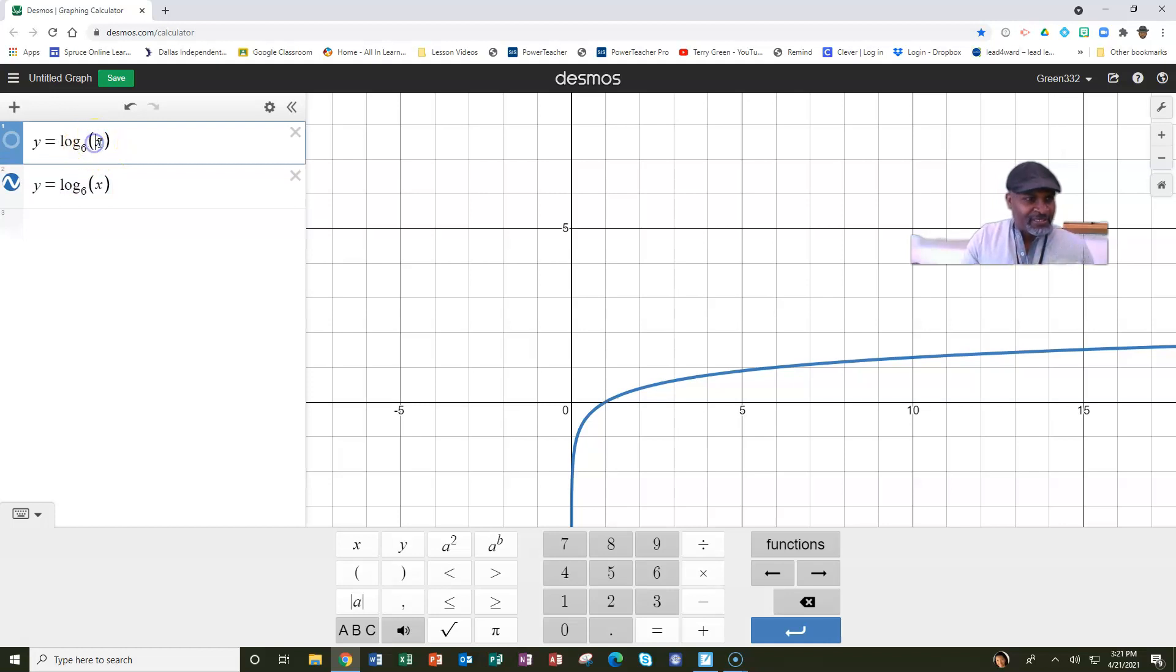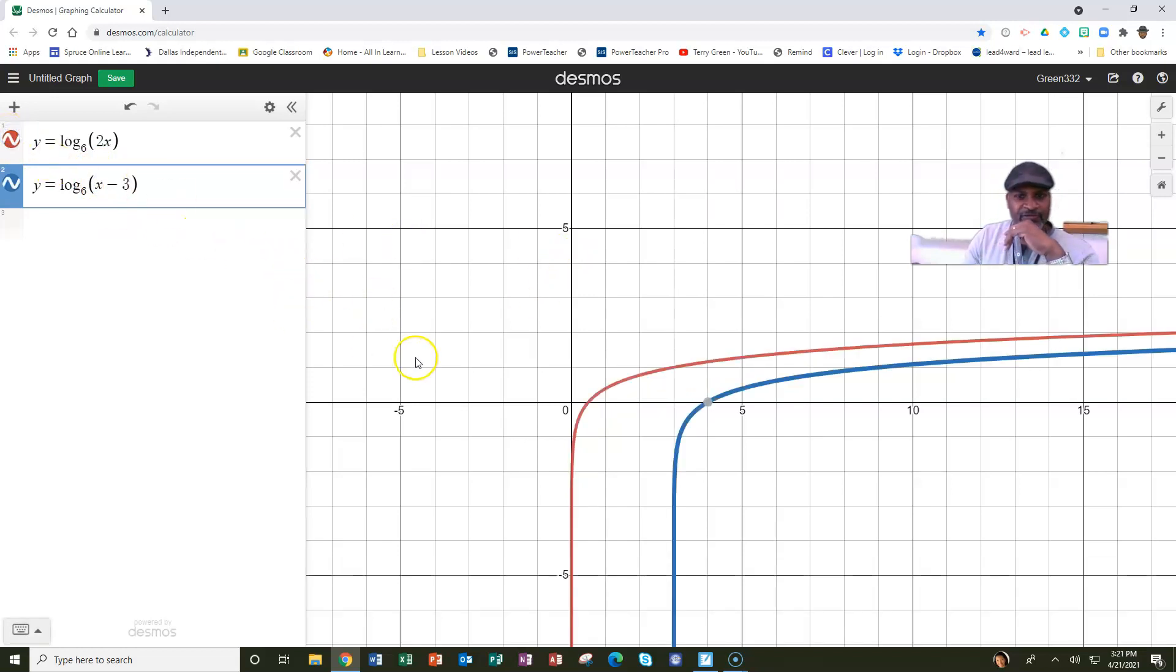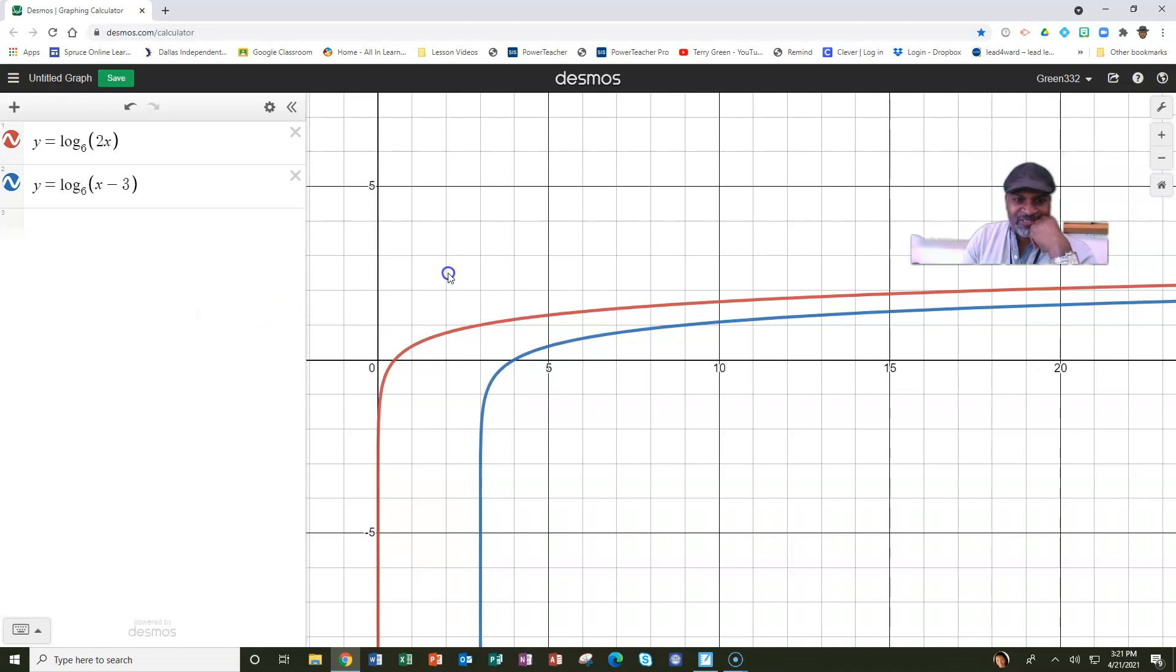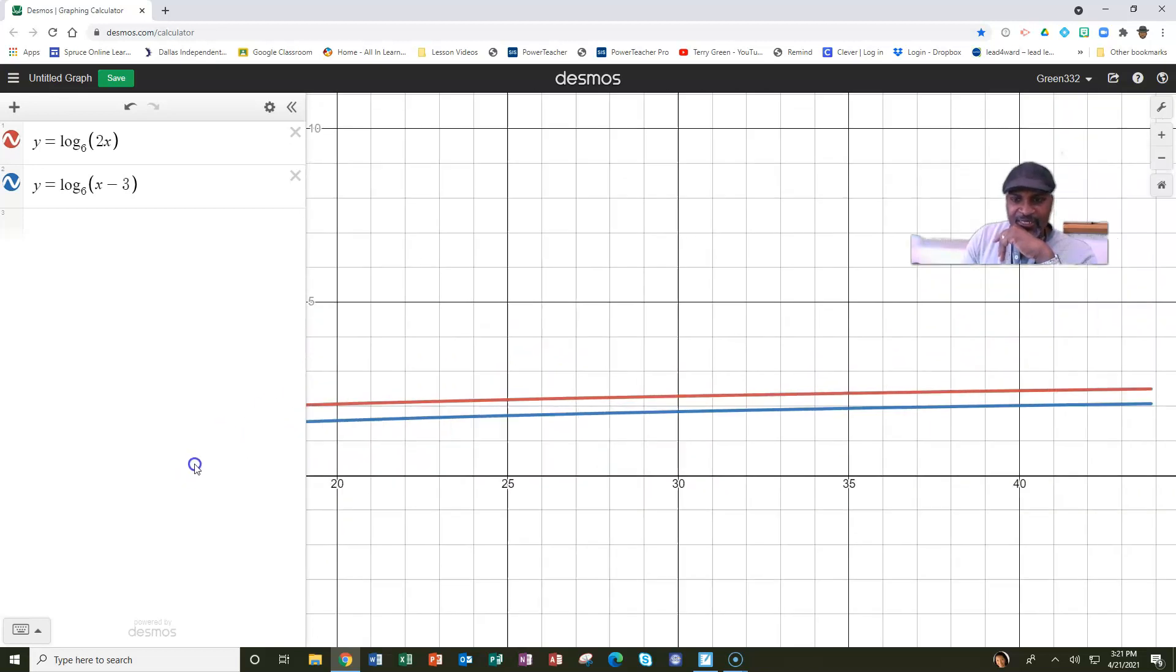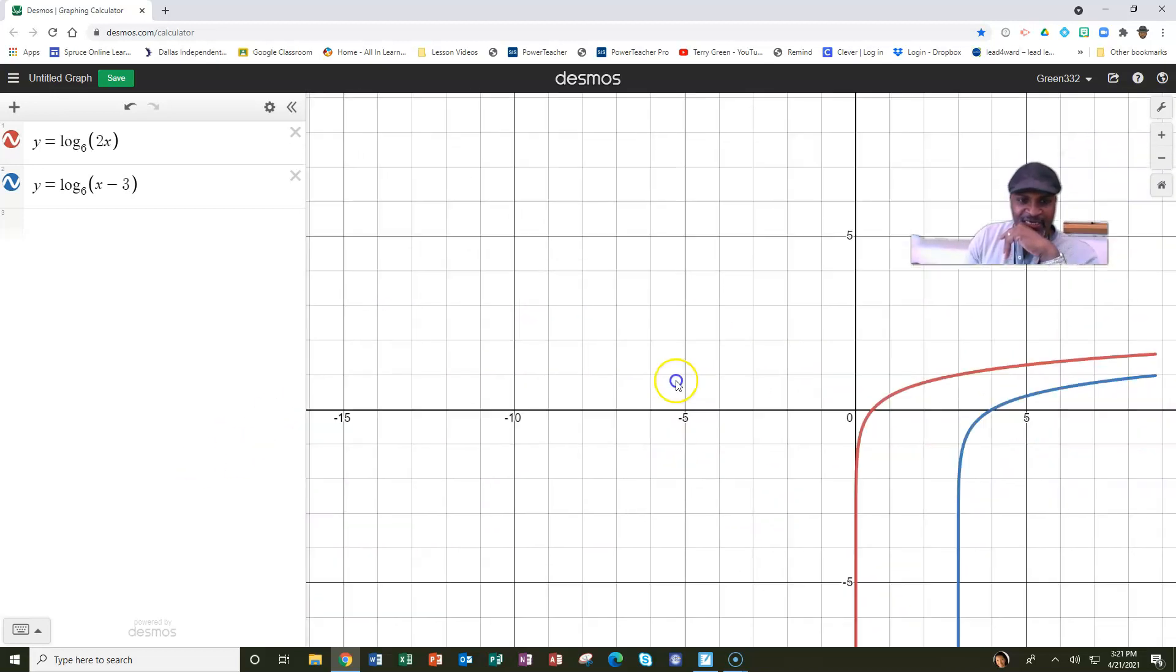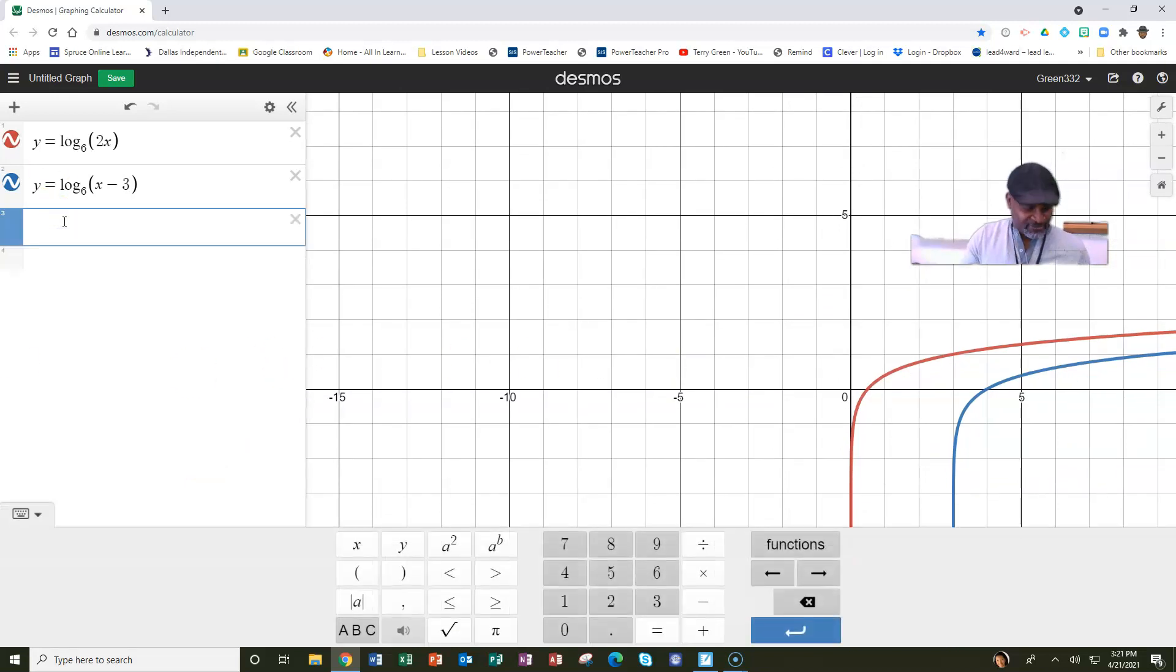Let's graph the log base 6 of 2x on one side, and the log base 6 of x minus 3 on the other. Now, if that was a solution to our equation, and we said negative 3 was a solution, that means these graphs should intersect at negative 3. One thing is they don't intersect at all. And at negative 3, what happens when x is negative 3?